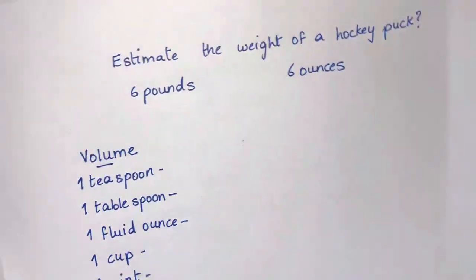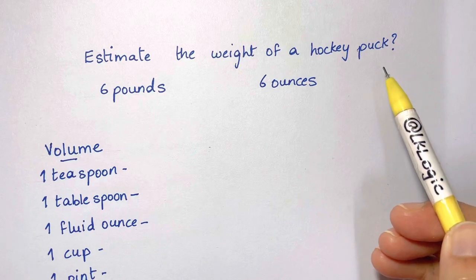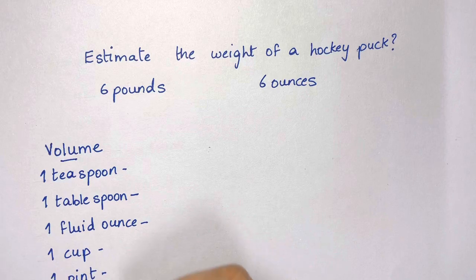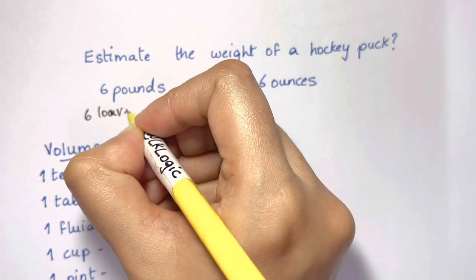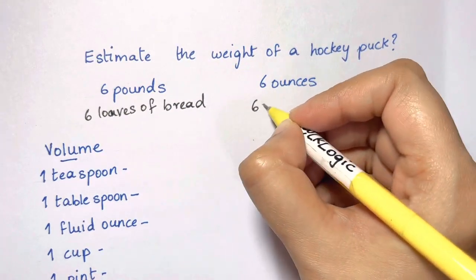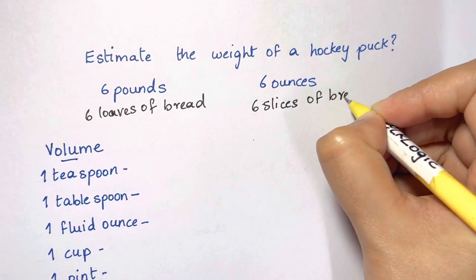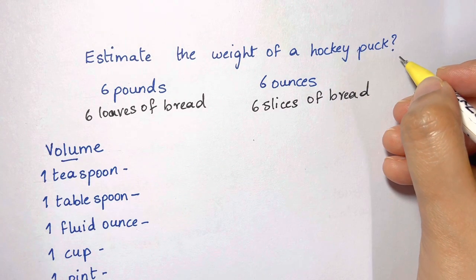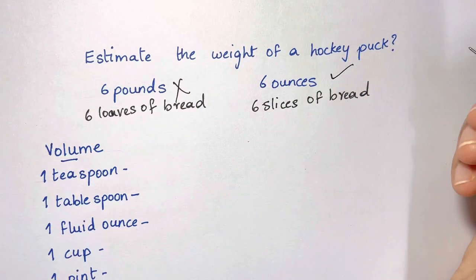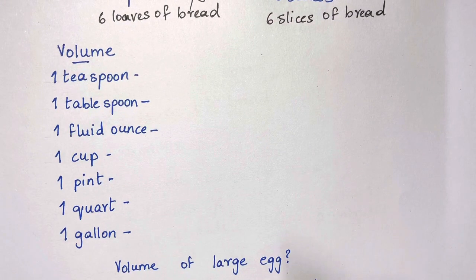Next, let's estimate the weight of a hockey puck — is it six pounds or six ounces? Six pounds is nearly six loaves of bread, and six ounces is approximately six slices of bread. A hockey puck weighs six ounces, not six pounds.